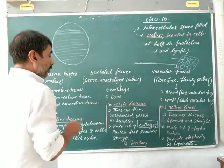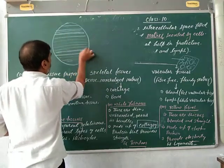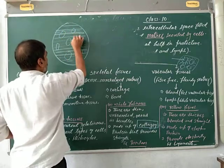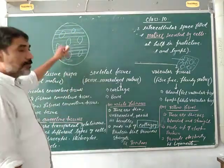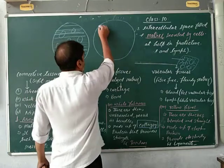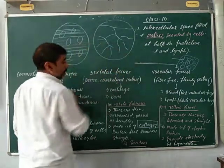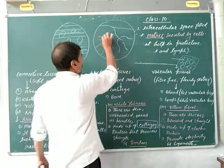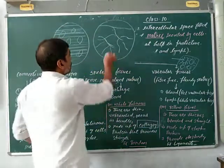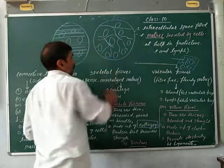White fibrous connective tissue is made of collagen protein, which provides strength to the tissue. It can contain different types of cells. Yellow fibrous connective tissue has fibers that are highly branched and made up of elastin protein, which provides elasticity to the tissue. It can also contain various types of cells such as mast cells and fibroblasts.